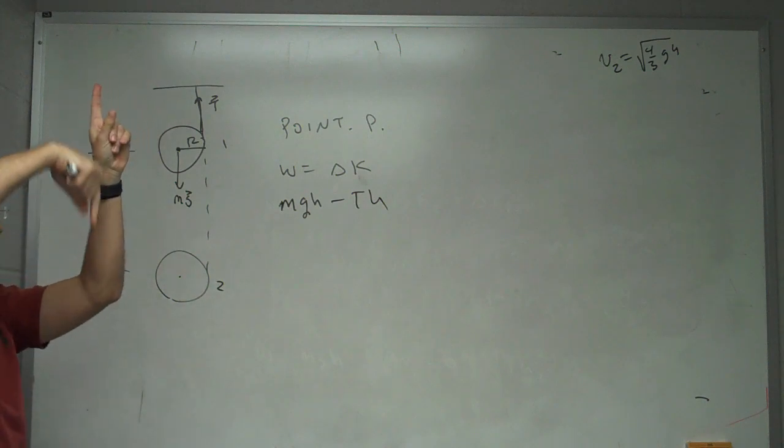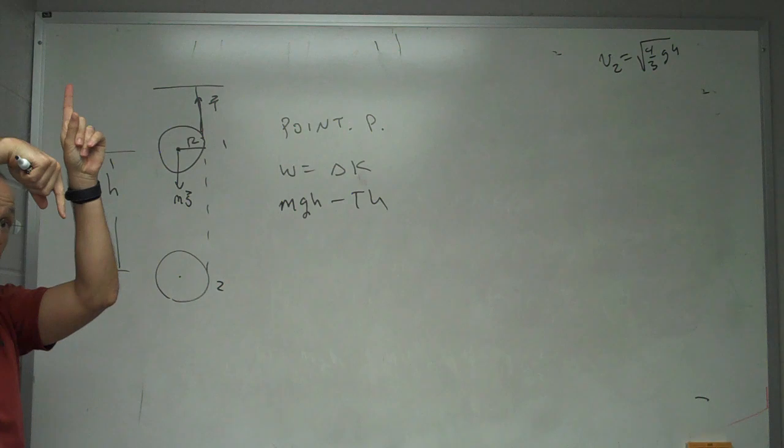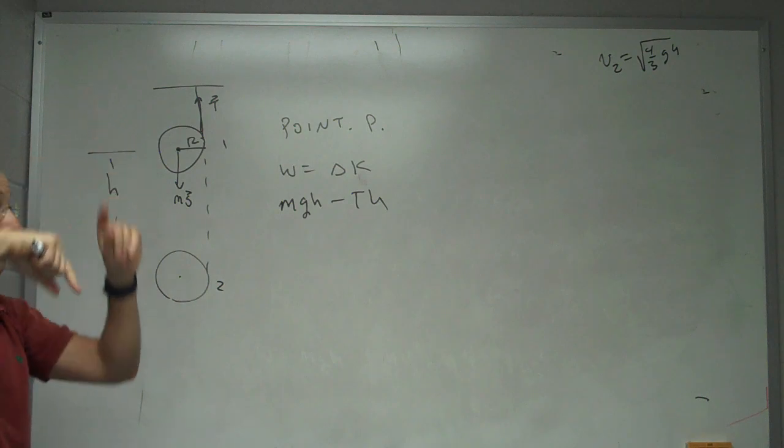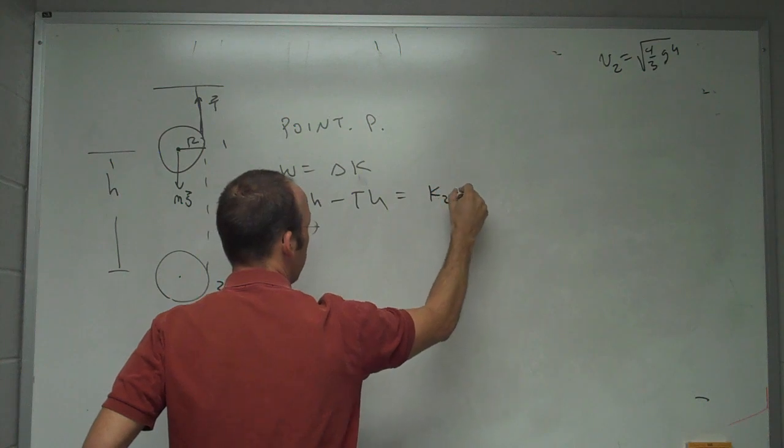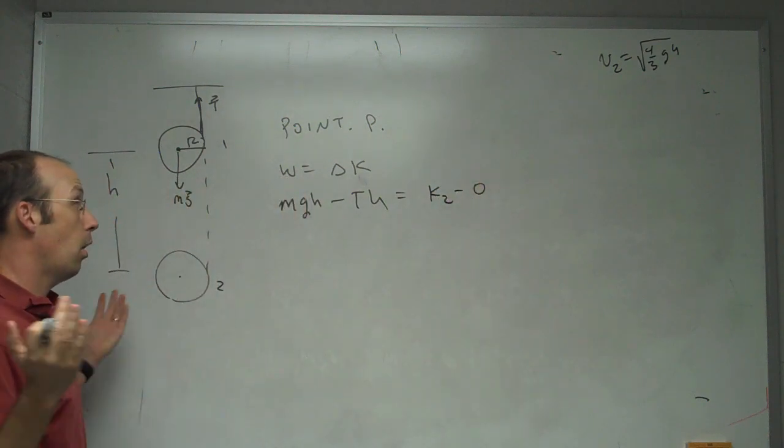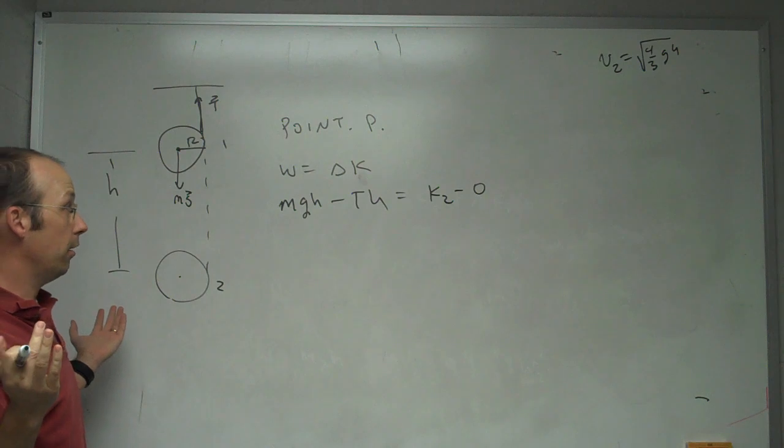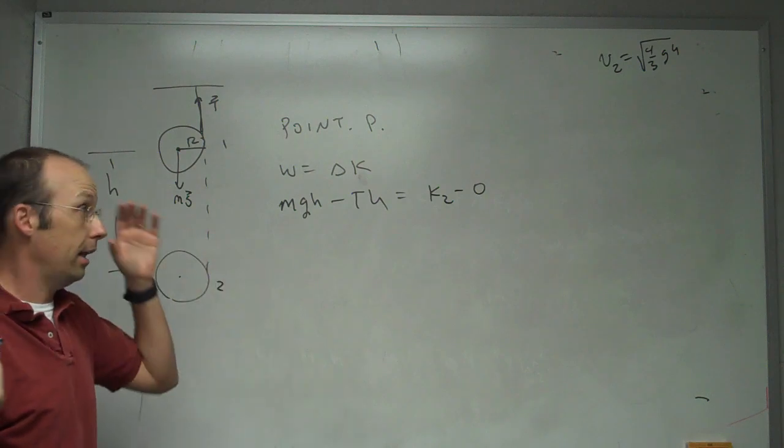I have the work done by gravity is going to be mgh plus the work done by tension minus Th because the tension is pulling up. So the angle between the tension and the displacement is 180 degrees. So that's going to give me a negative work. And this is going to be K2 minus the initial 0. Okay, well, you see where I'm going here. I already know the final kinetic energy. It's the same as what it was before.